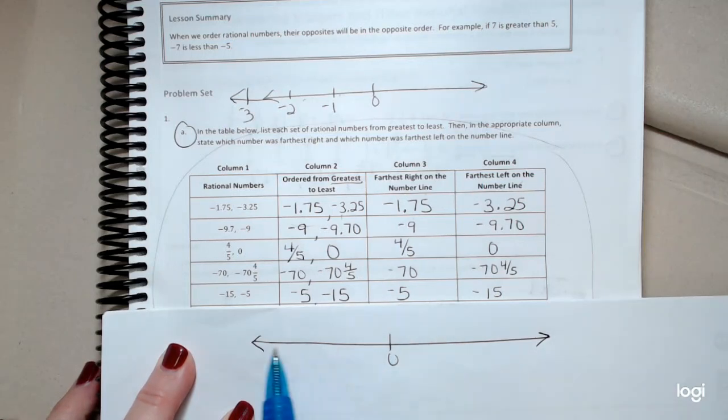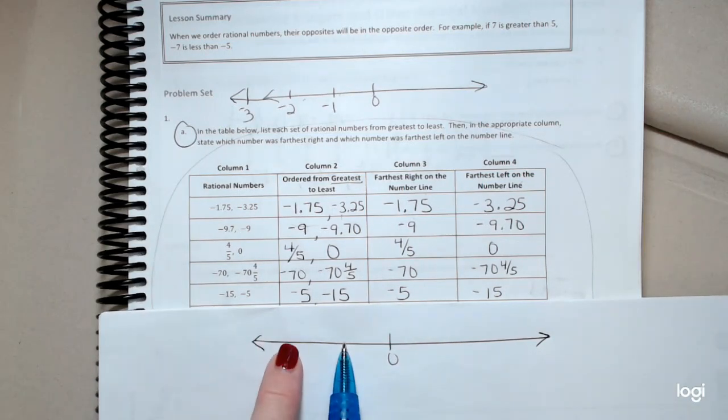Let's look at the next one, negative 15 and negative five. Well, negative five would be here, negative 15 would be here. So negative five would be bigger.